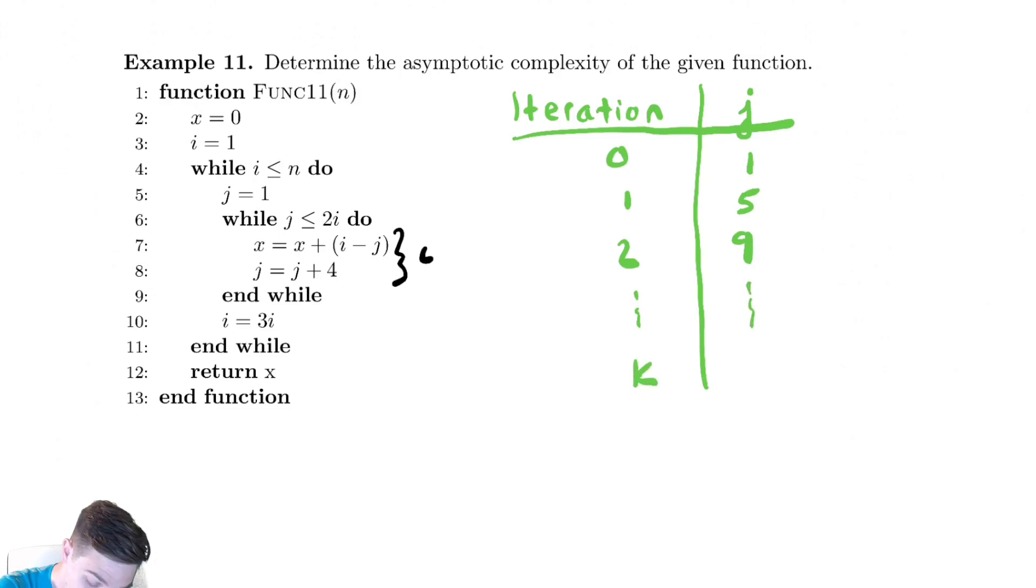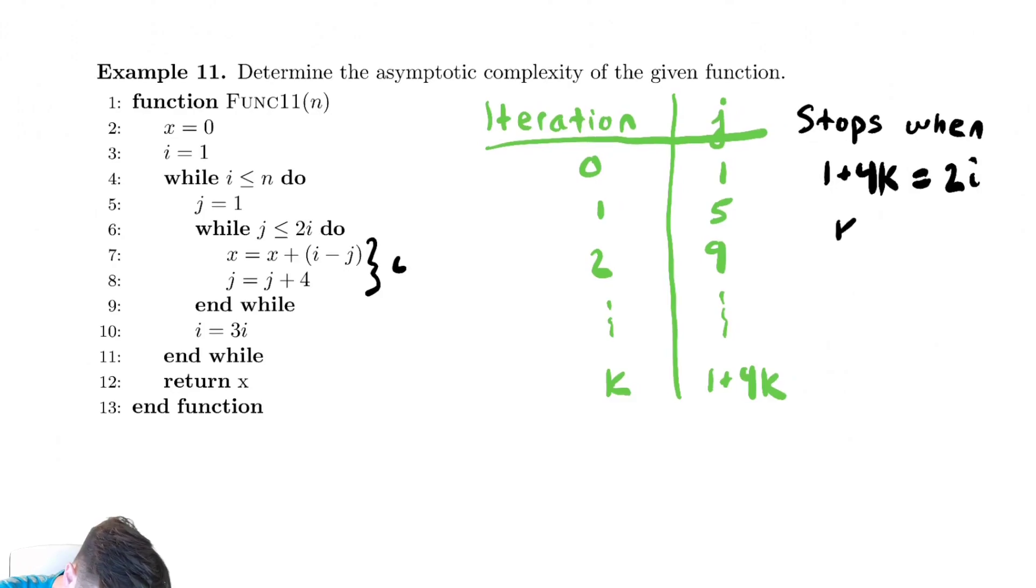After k iterations, we have 1 plus 4 times k. When does this terminate? Well, it stops when 1 plus 4 times k is equal to the stopping condition of the inner while loop, which is 2 times i. You want to solve that for the number of iterations, so solve that for k. We get k equals 2i minus 1 over 4.